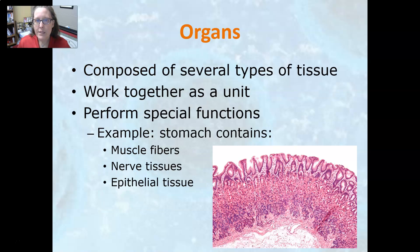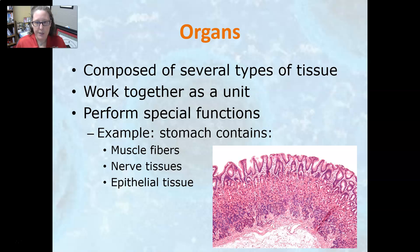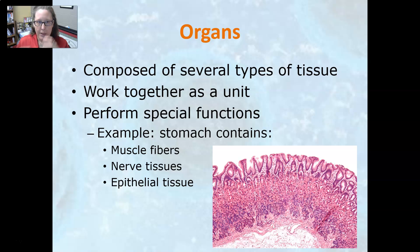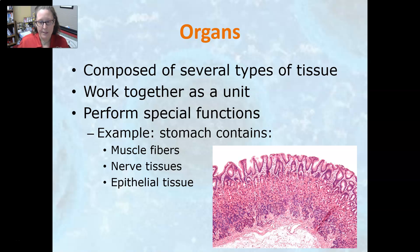Organs are composed of several types of tissue assembled together that work as a unit to perform special functions. For example, the stomach contains muscle fibers, nerve tissues, and epithelial tissue, and together these work to secrete the digestive juices — the stomach acid — that starts breaking down the food we have swallowed and that has entered our stomach.